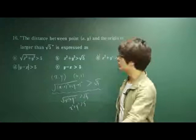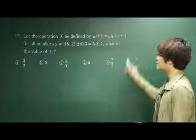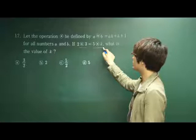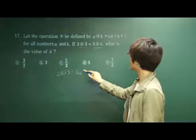Okay, let's move on to the next question, 17. Let the operation, this thing, be defined by a circle b is equal to this for all number a and b. If 2 circle 3 is equal to 5 circle k, what is the value of k? So 2 circle 3 is, according to this rule here, it is 6 plus 3 plus 1, which is equal to 10.